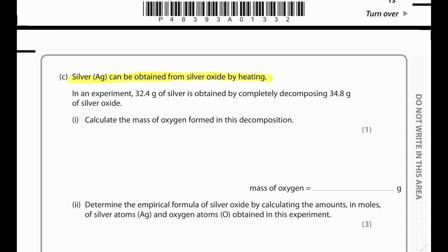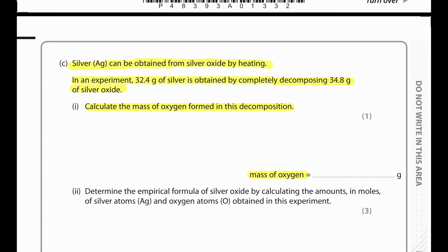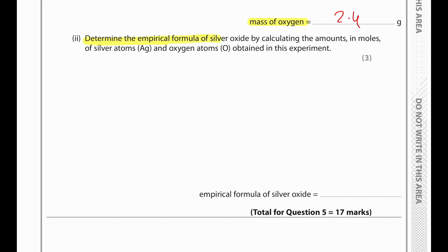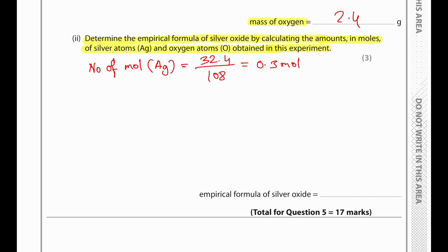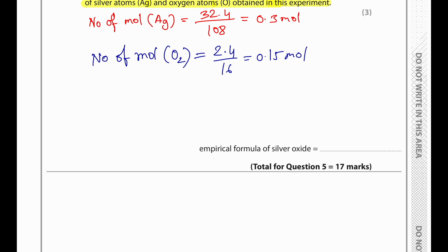32.4 g of silver is obtained by completely decomposing 34.8 g of silver oxide. Mass of oxygen formed: 34.8 minus 32.4 equals 2.4 g. Moles of silver: 32.4 ÷ 108 = 0.3 mol. Moles of oxygen: 2.4 ÷ 16 = 0.15 mol. The mole ratio is 2 silver to 1 oxygen, so the empirical formula of silver oxide is Ag2O.